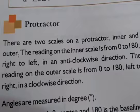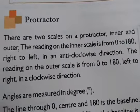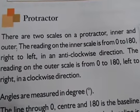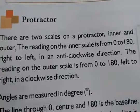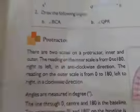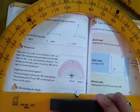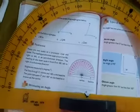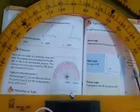Protractor. There are two scales on a protractor: Inner and Outer. The reading on the inner scale is from 0 to 180. So this is a model of protractor — it has two scales for measuring angles.